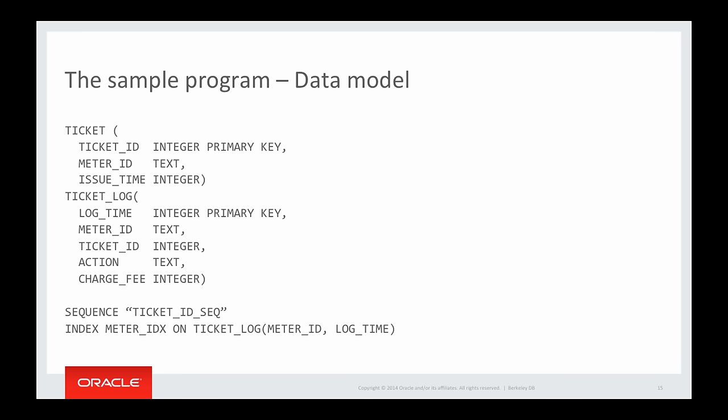This is the data model of the sample program. We use two kinds of data. Tickets are used in ticket transactions — each ticket has a unique ID, the ID of the parking meter issuing the ticket, and when the ticket was created. The TicketLog models operational logs generated by parking meters. Each log contains the time the log is created, the parking meter ID, the ticket ID, the action performed, and additional business data. The ticket ID is generated from a sequence, and we have created a secondary index on the meter ID field of the ticket log.